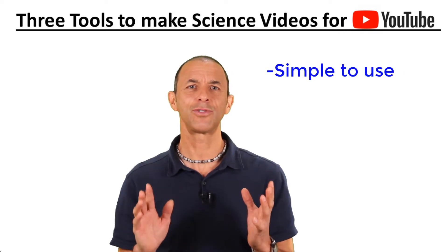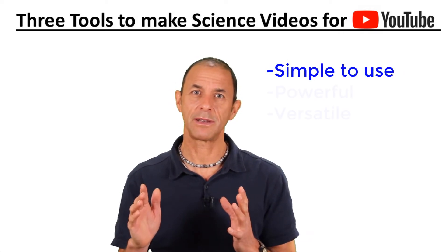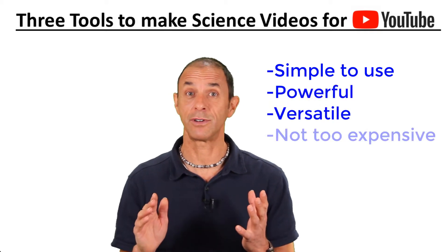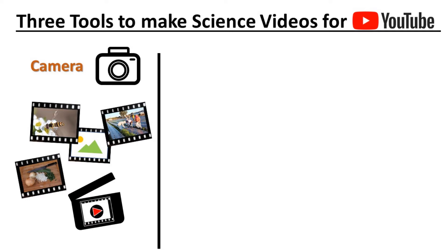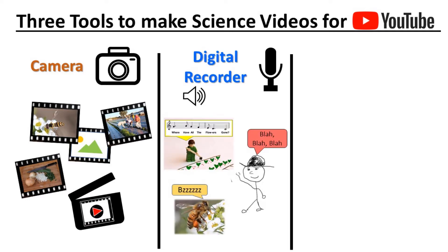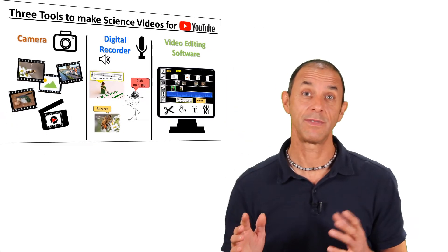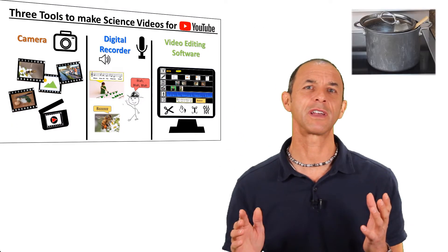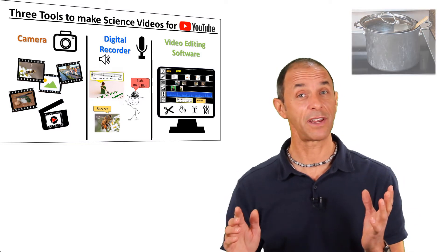These tools are pretty simple to use if you practice a little bit, but they're very powerful and versatile, and they're not overly expensive. The first tool is a camera to capture the visuals. The second tool is to help you get good audio, which is actually a really important part of video production. And the last tool is the computer software that's kind of like a cooking pot where you combine the visual and the audio ingredients to make your video.